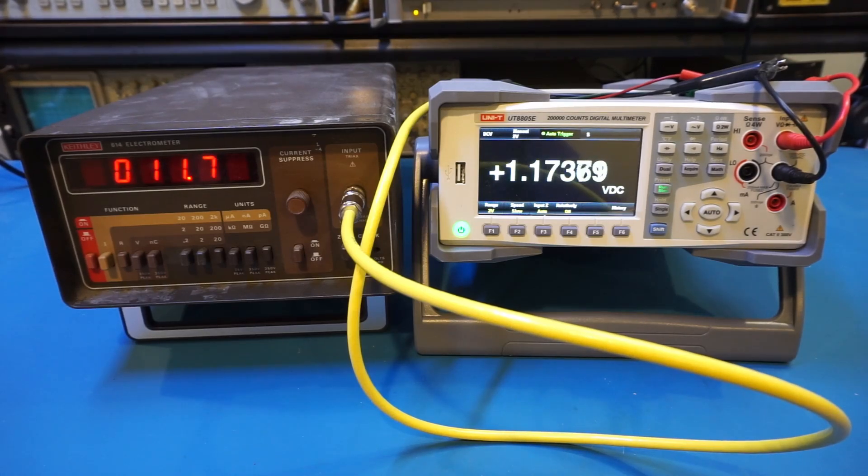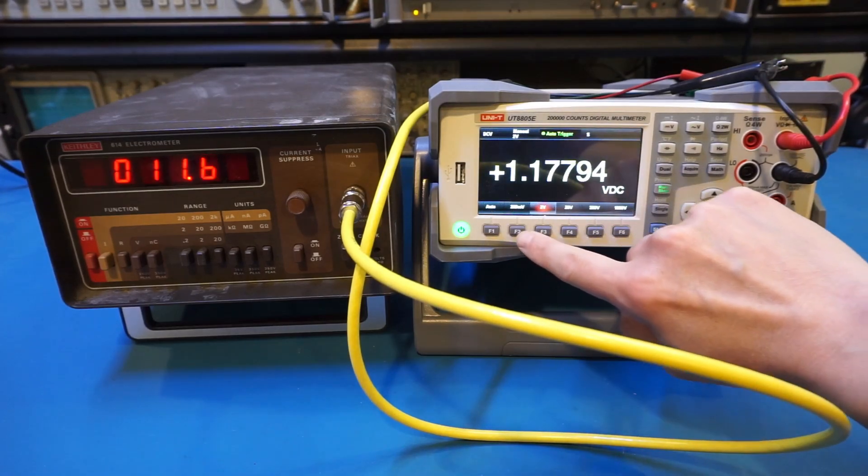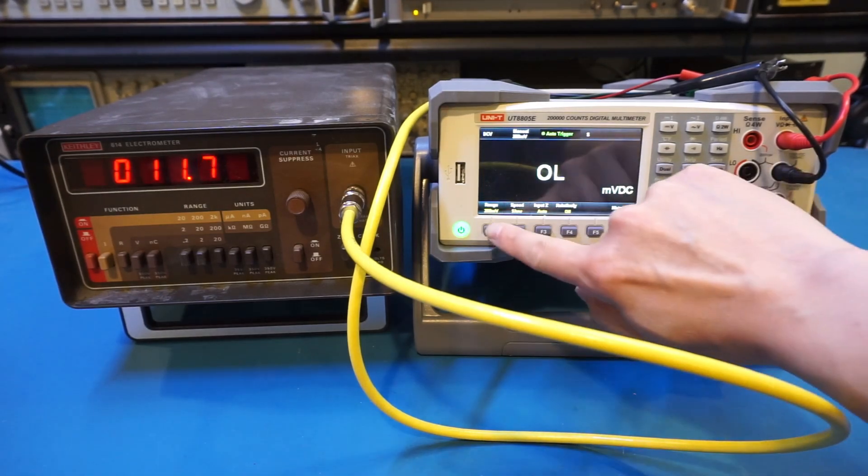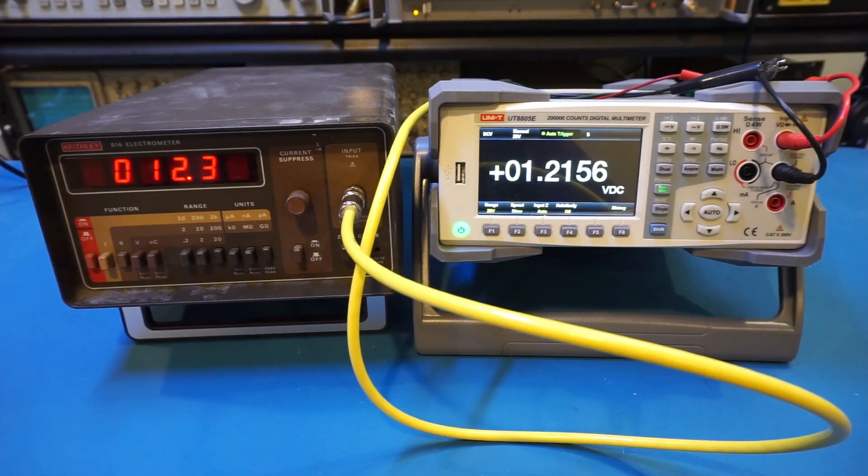And let's switch to a different range to see what we get. So let's change it to 200 millivolts. And you can see that we have the same input impedance. And let's change it to 20 volts. So now we have pretty much confirmed that the three ranges under 20 volts all have the capability of high input impedance up to above 10 gigaohms.